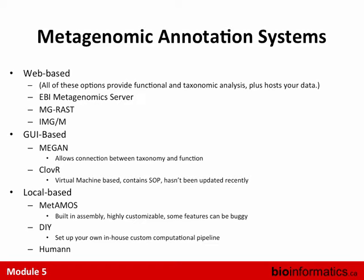GUI-based options include MEGAN, which takes BLAST output as input and lets you relate taxonomic to functional data. Clover was a virtual machine-based SOP but hasn't been upgraded in a while. MetAMOS is a local pipeline where you can customize the database, whether to do assembly, and other options — it's pretty cool though some features were buggy when I tested it. The do-it-yourself pipeline is still massively popular. HUMAnN is what I'll talk about next.